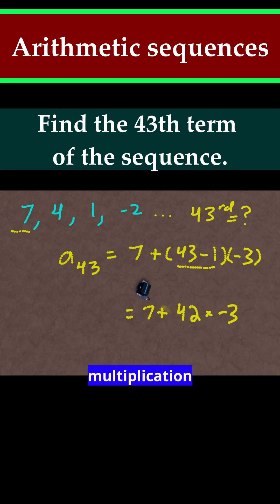So this turns into 7 plus 43 minus 1 is 42 times negative 3. Order of operations states that we do the multiplication first. 42 times minus 3 is just negative 126. And then 7 plus negative 126 is equal to negative 119. So using both methods, we were able to get the same answer of negative 119.